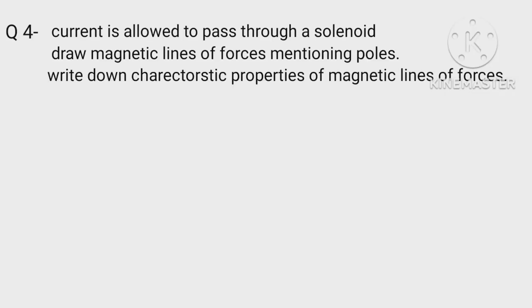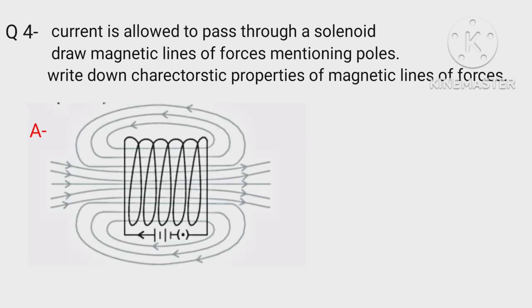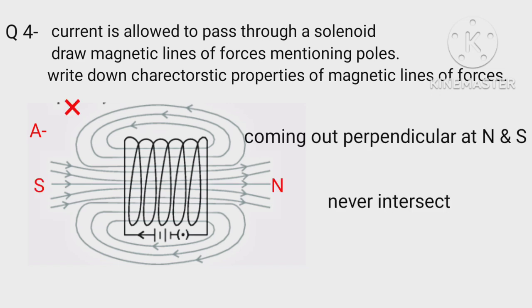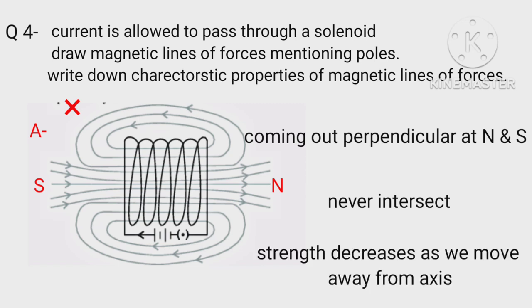Current is allowed to pass through a solenoid. Draw magnetic lines of forces mentioning poles. Write down characteristic properties of magnetic lines of forces. Since lines come out from north pole and fall on south pole, therefore right hand side is north pole N and left is south pole S. Lines never intersect. Magnetic field strength decreases as we move away on either side from magnetic axis.